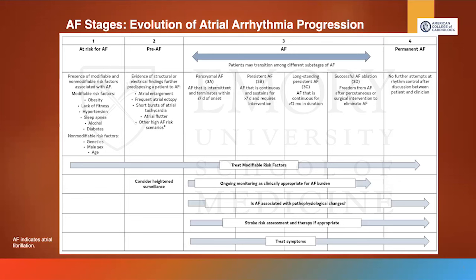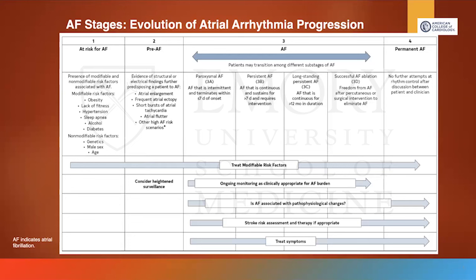Stage one focuses on risk stratification and management of both modifiable and non-modifiable risk factors. You look at the patient's obesity, exercise tolerance, comorbidities such as hypertension, renal disease, alcohol use, and diabetes. You also look at genetics, sex, and age. The AFib population historically in the U.S. has been generally older white men, representing non-modifiable risk factors.